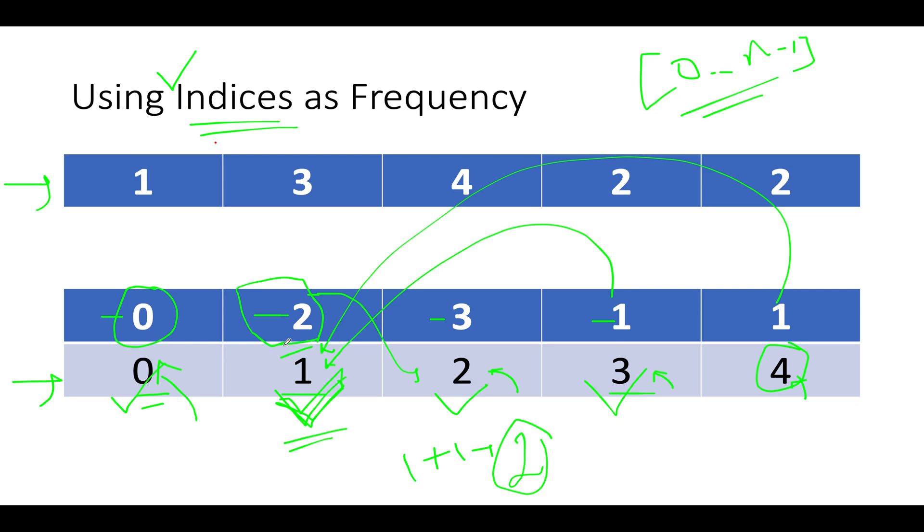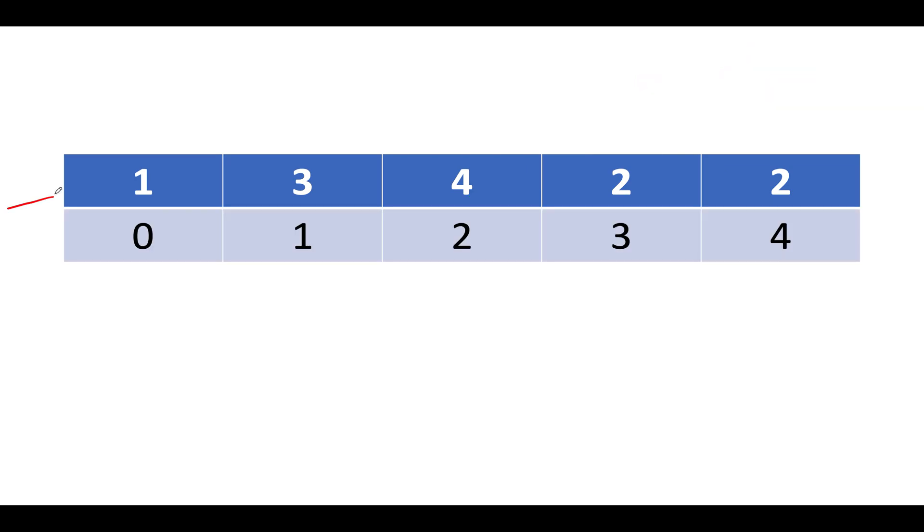Which is that approach? Fast pointer, slow pointer is the way to go. We will be exploiting the property of cycle detection in a linked list to solve this question. How can we apply this algorithm onto this problem? Let's walk through it. So here let's take the same example that was specified in the question. We have elements as 1, 3, 4, double 2. And let's start the iteration. At the 0th index, what element do we see? We see 1 here.